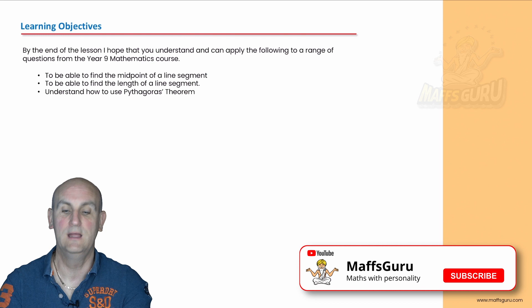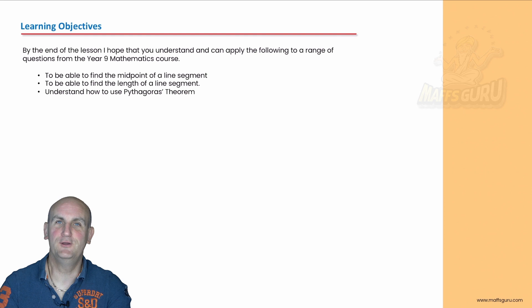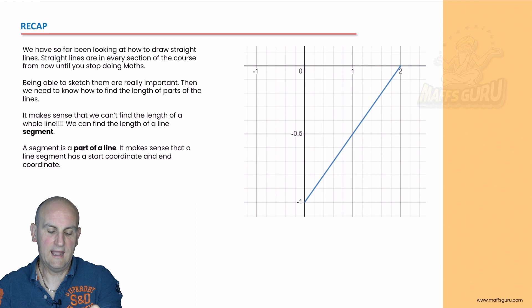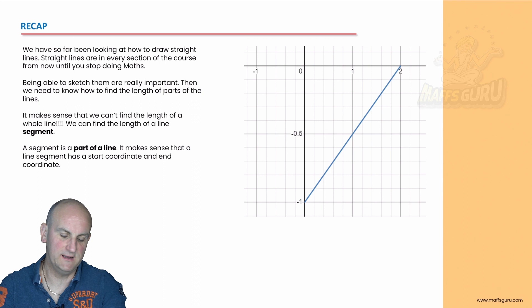Thank you very much Cambridge for allowing me to use your examples. This video is going to cover how to find the midpoint and length of a line segment with a little bit of understanding about Pythagoras' theorem. When we recap, it makes sense that we can find bits of lines, and that's effectively what a line segment is — it is a small section of a line.